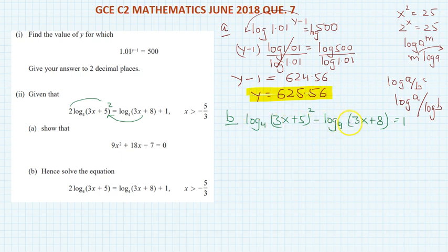Now this is log a minus log b is equal to log a over b, so that is log base 4 of 3x plus 5 squared over 3x plus 8.